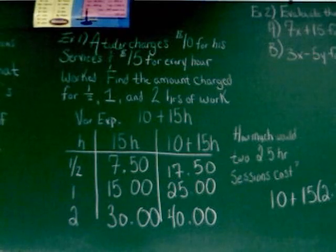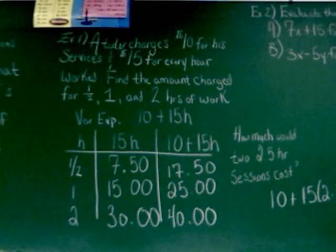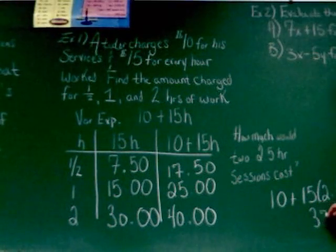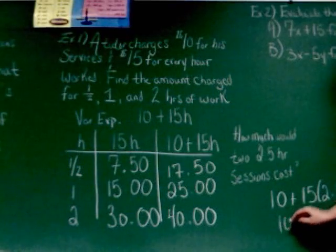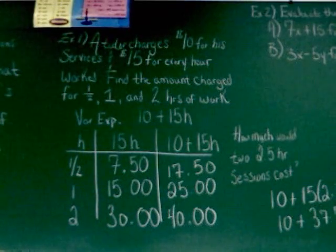So, fifteen times two-and-a-half happens to be thirty-seven point five. I'll figure it out for you. Or thirty-seven dollars and fifty cents. And I have to add in the ten, and that's going to give me? Forty-seven fifty. Forty-seven fifty.